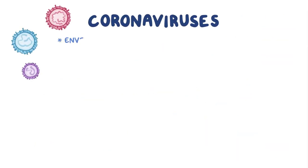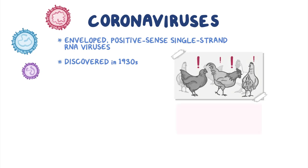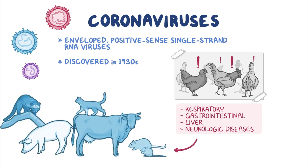Coronaviruses are a group of enveloped, positive-sense, single-strand RNA viruses. They were first discovered in the 1930s in domestic poultry that had respiratory, gastrointestinal, liver, and neurologic diseases. But since then, they have been found in a variety of animals, and seven coronaviruses are currently known to cause disease in humans.